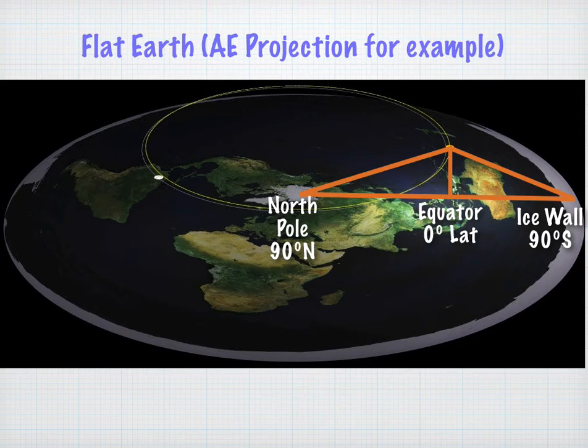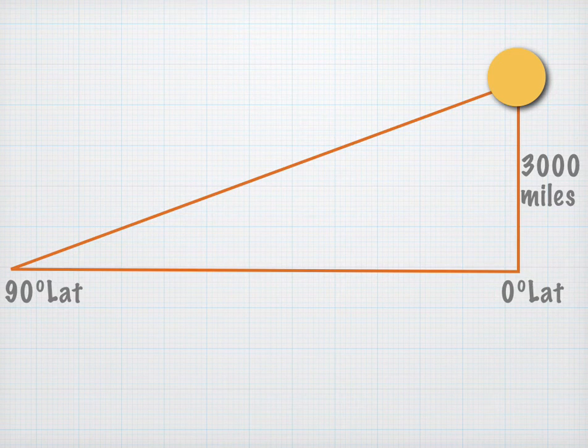So we're going to draw a little triangle here. And this triangle is very symmetric because the equator is equidistant from between the north pole and the ice wall. So let's just focus in on the left-hand side of this triangle. Again, the north pole is on the left, and the equator is on the right. And we're going to place the sun at 3,000 miles in elevation.